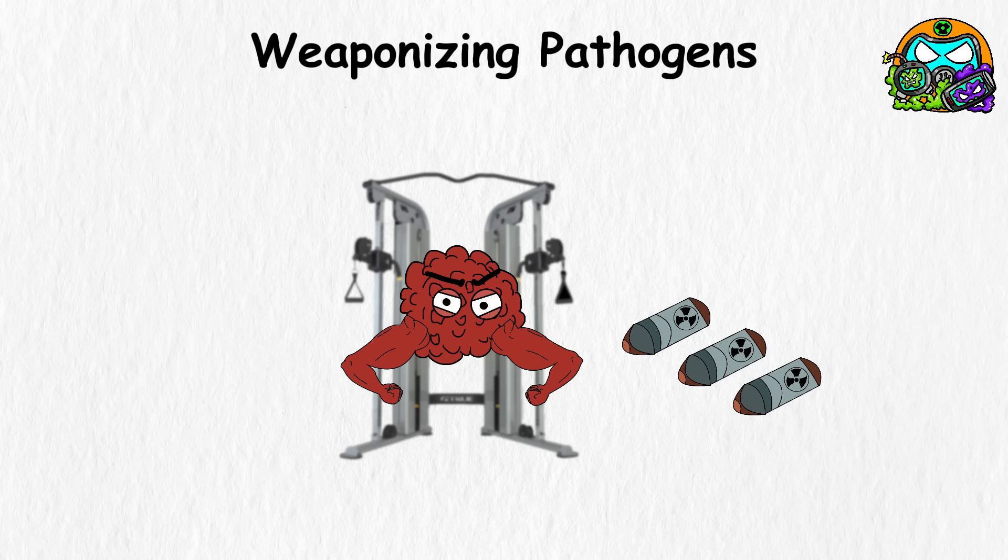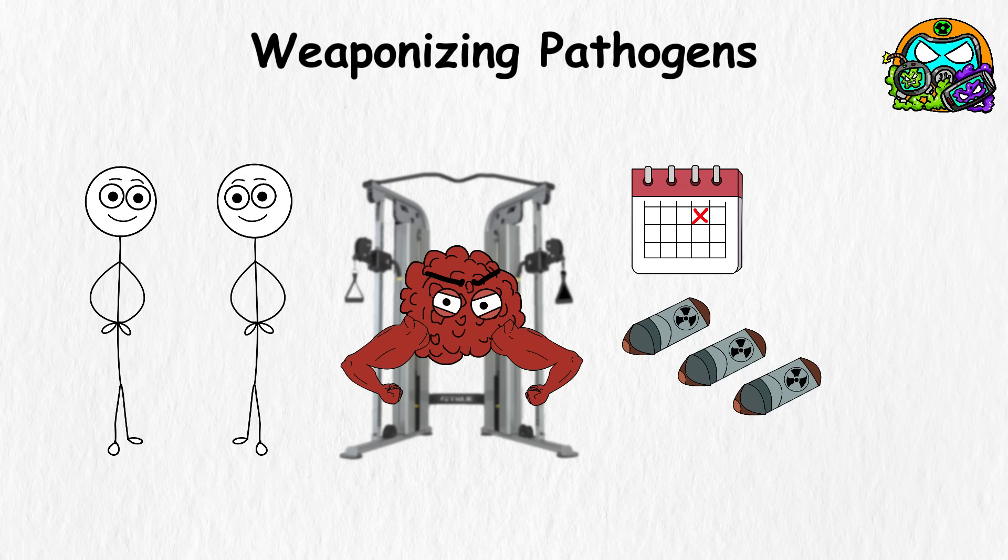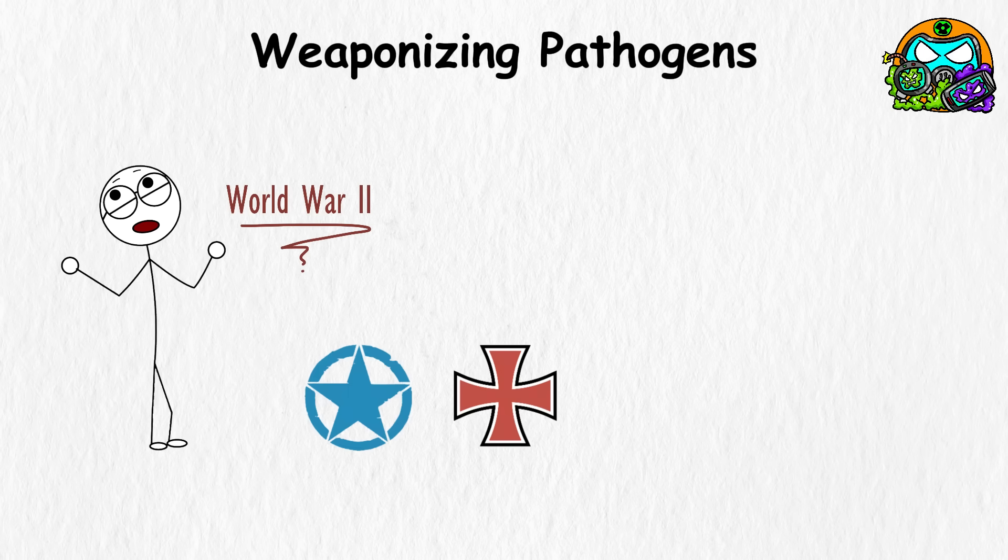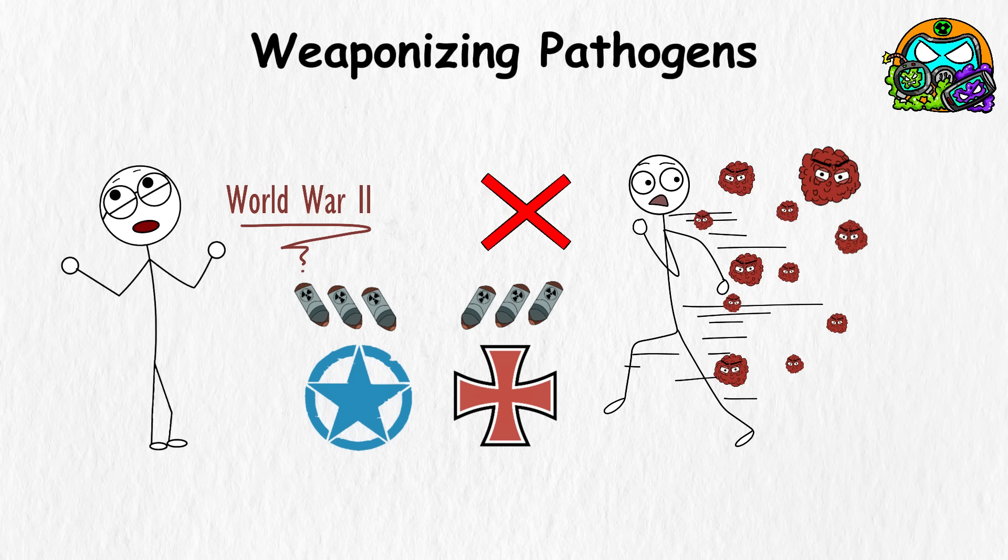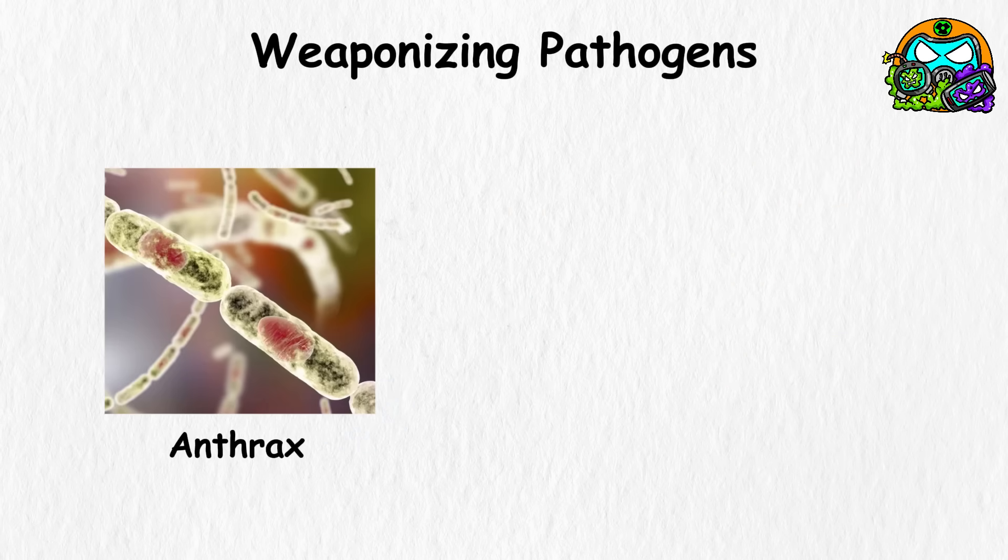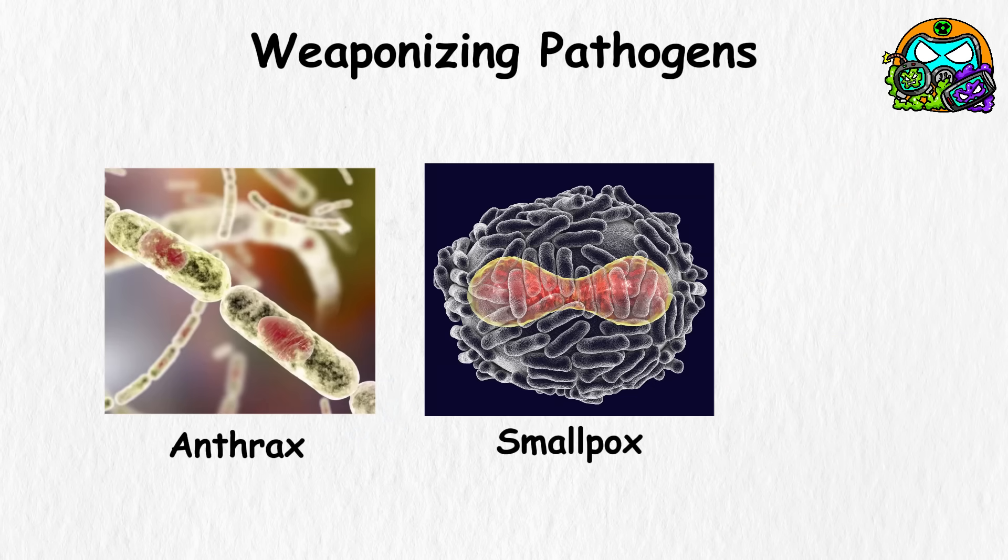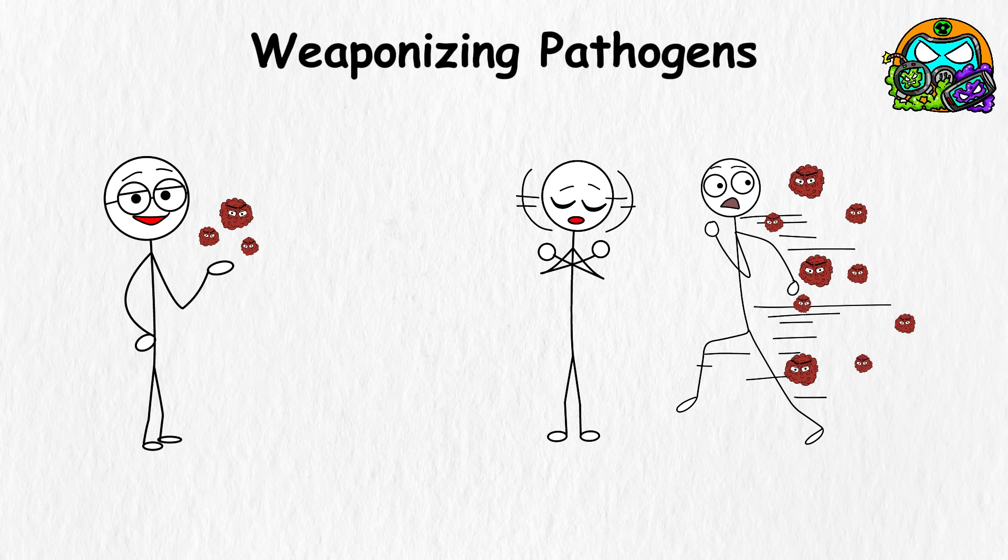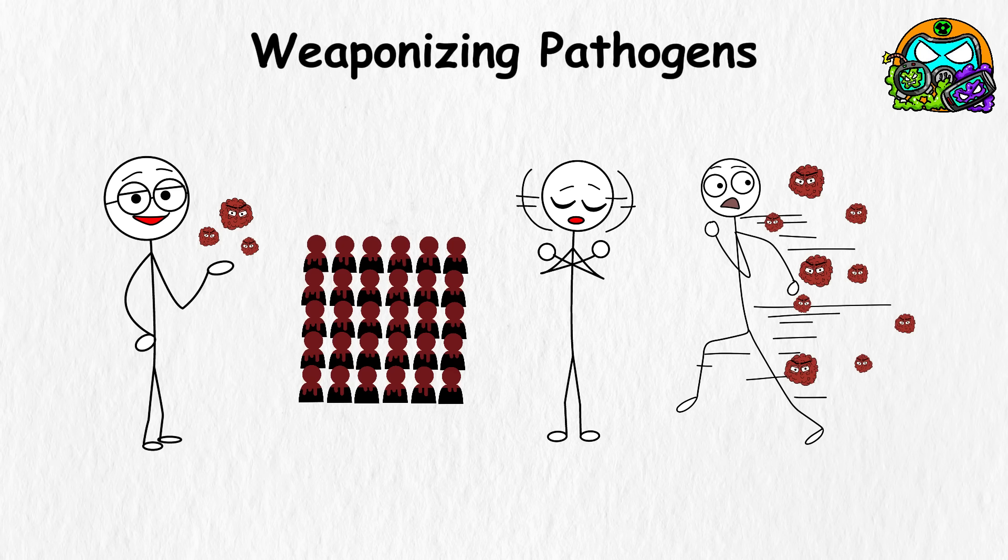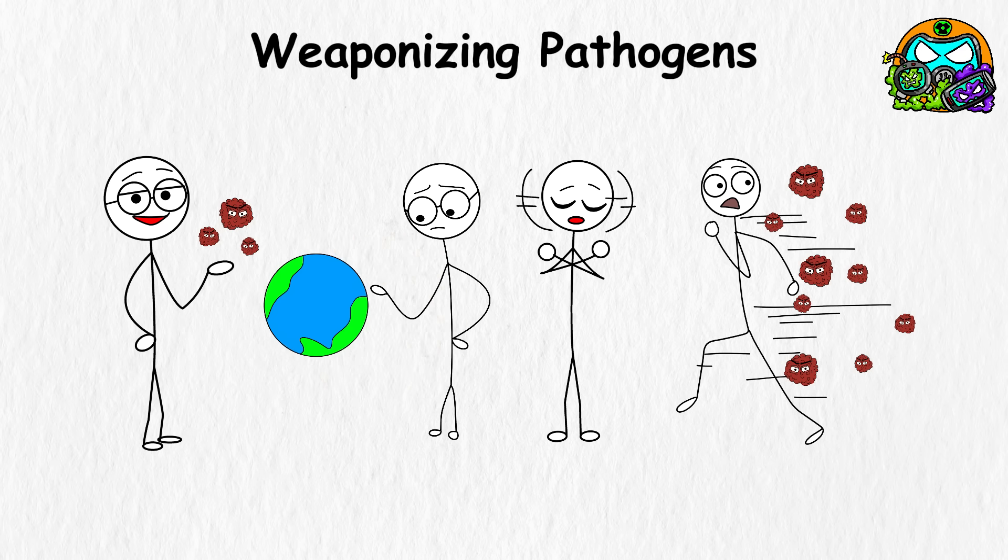The concept of weaponizing pathogens has existed since the early 20th century, proving that humans never miss a chance to make a bad idea worse. During World War II, both the Allies and the Axis powers were eyeing biological warfare like it was the next big thing, until they realized that unleashing killer microbes could backfire spectacularly. After all, diseases aren't known for their loyalty. Once they're out there, they don't discriminate on who they take down. Bacteria like anthrax or viruses like smallpox don't come with a remote control. You launch one of these, and it's liable to come back and cause a mess you can't scrub away. It's not just the target population that's in trouble. Once it mutates, the whole world might end up on its hit list.